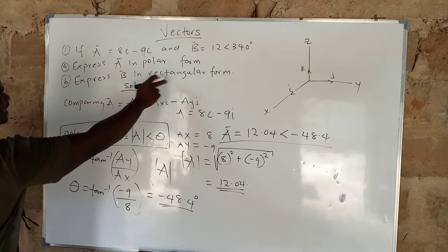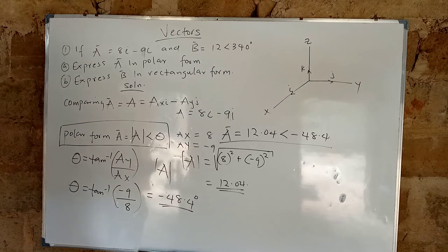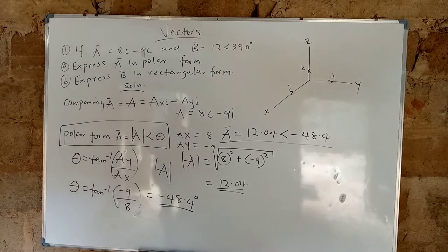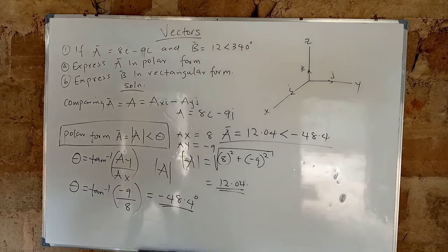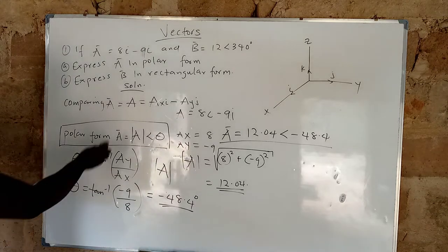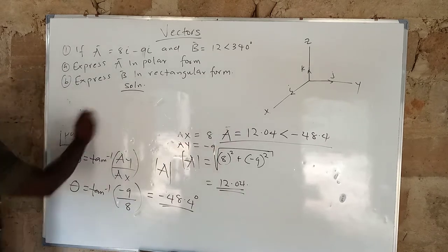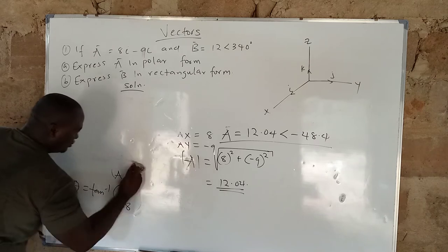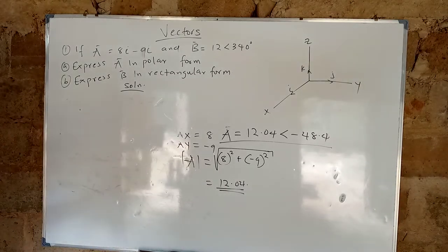For B, express B in rectangular form. If you understand part A very well, you can see that B is in polar form, and we want to express it back to rectangular form.